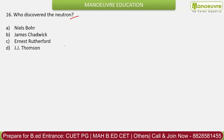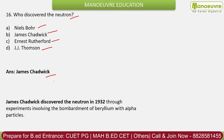Question 16: Who discovered the neutron? Options: Niels Bohr, James Chadwick, Ernst Rutherford, J.J. Thomson. The correct answer is James Chadwick, who discovered the neutron in 1932. The electron was discovered by J.J. Thomson, and the proton was discovered by Goldstein. Neutrons are neutral in charge, electrons are negatively charged, protons are positively charged. Protons and neutrons together form the nucleus of an atom.